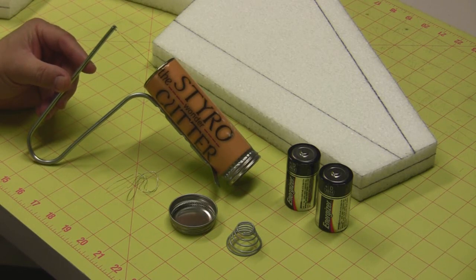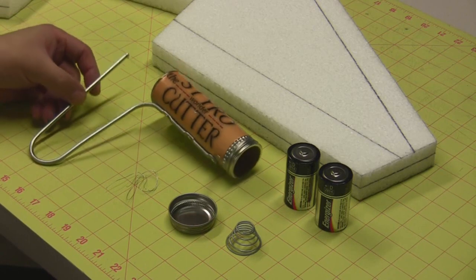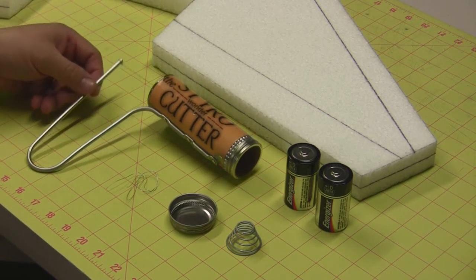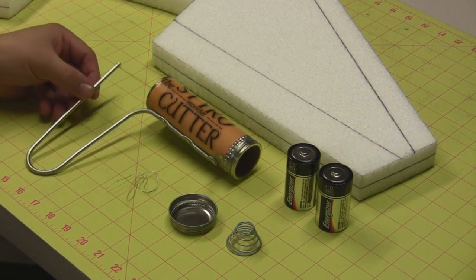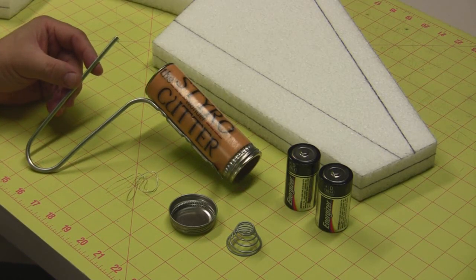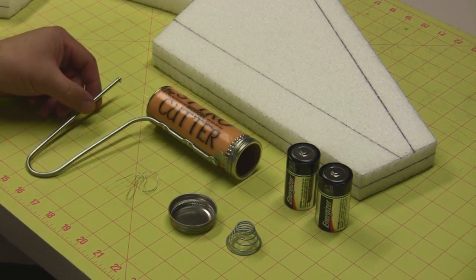This tool is called the Styro Wonder Cutter. Basically it is a battery-powered handheld hot wire tool. You may have seen me use it already on one of the build-along videos. Today we're going to take a closer look at it.